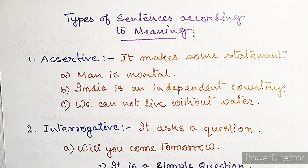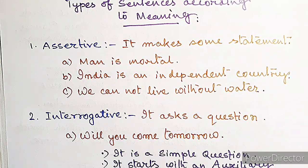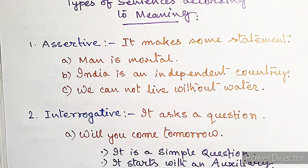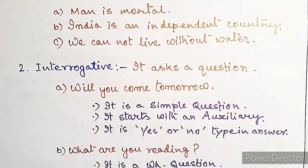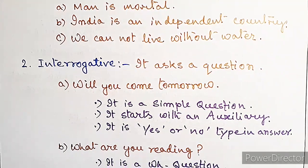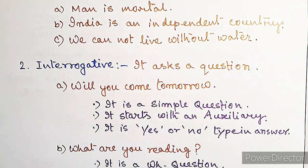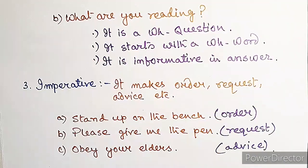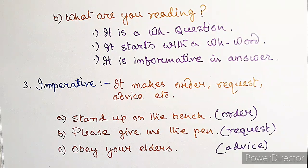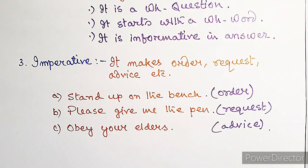Functionally: an assertive sentence makes a statement — for example, 'Man is mortal', 'India is an independent country.' An interrogative sentence asks a question. 'Will you come tomorrow?' is a simple yes/no question starting with an auxiliary verb. 'What are you reading?' is a wh-question starting with a wh-word that requires specific information in answer. An imperative sentence makes an order, request, or gives advice — for example, 'Stand up on the bench' is an order, 'Please give me the pen' is a request, 'Obey your elders' is advice.